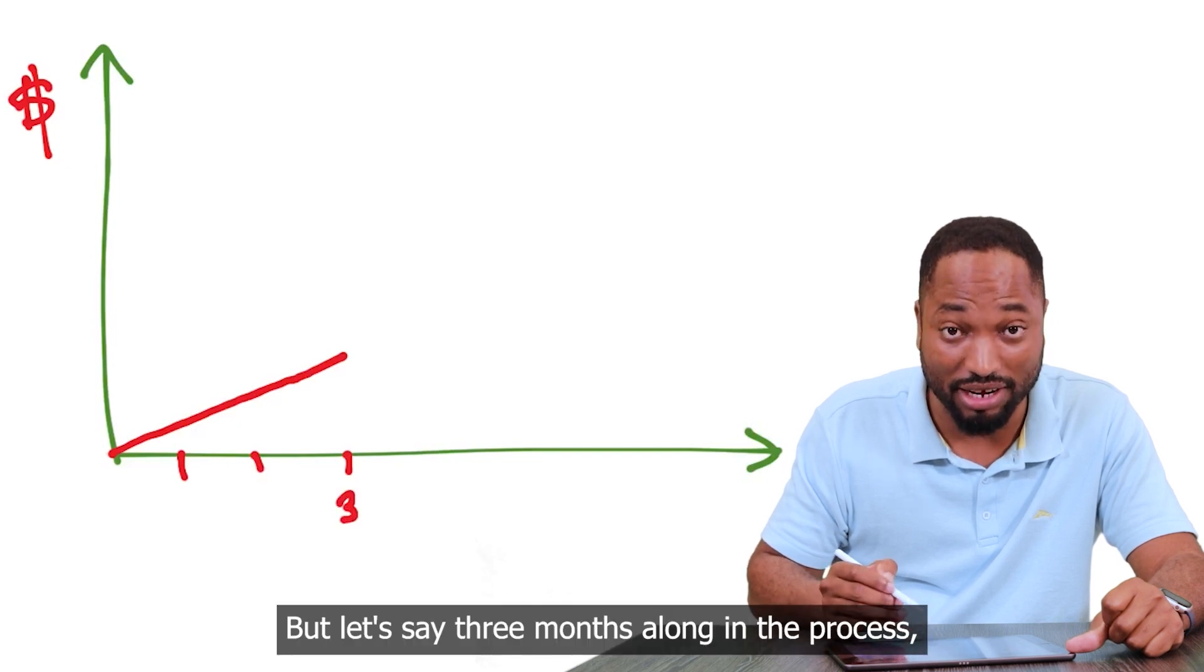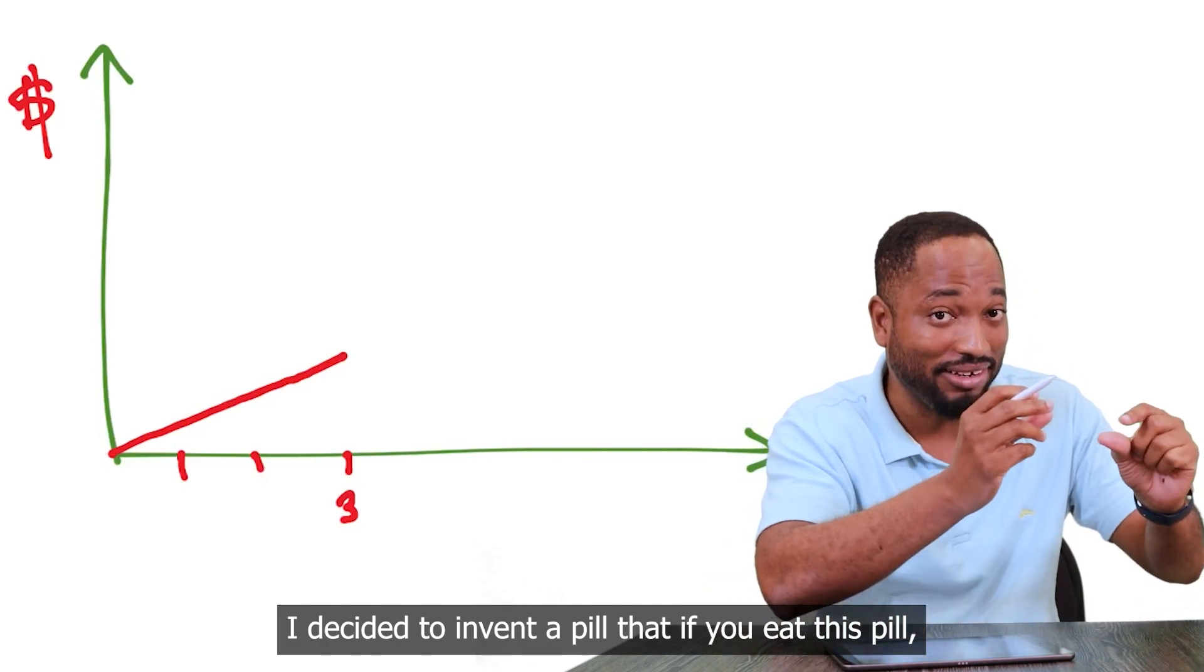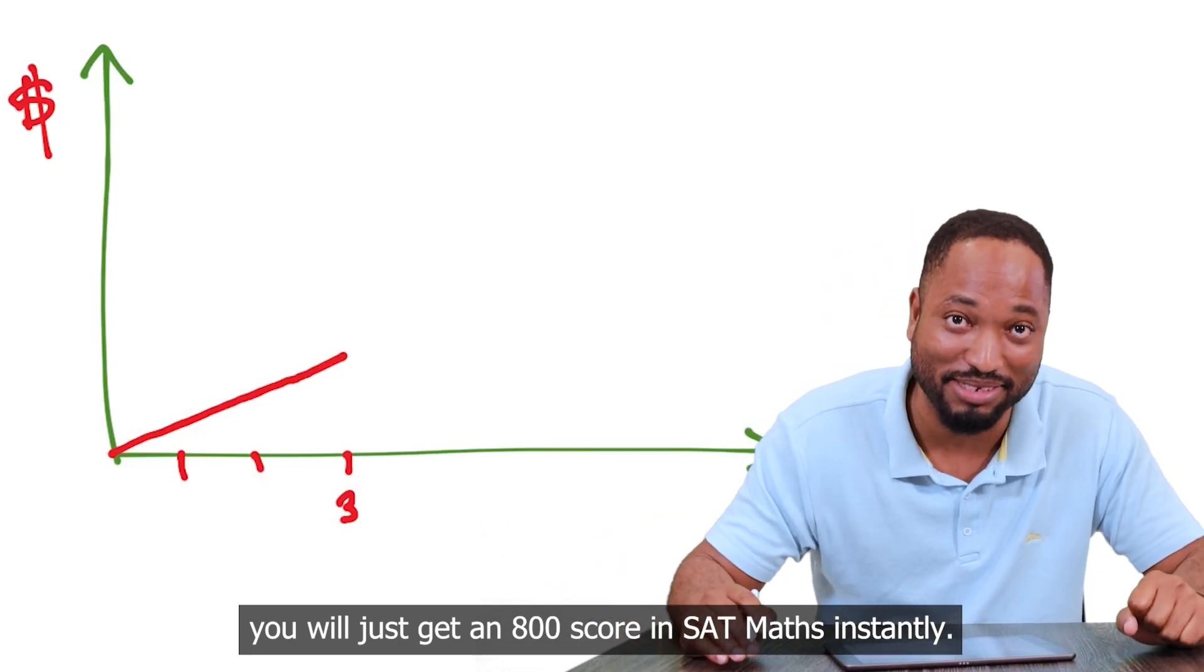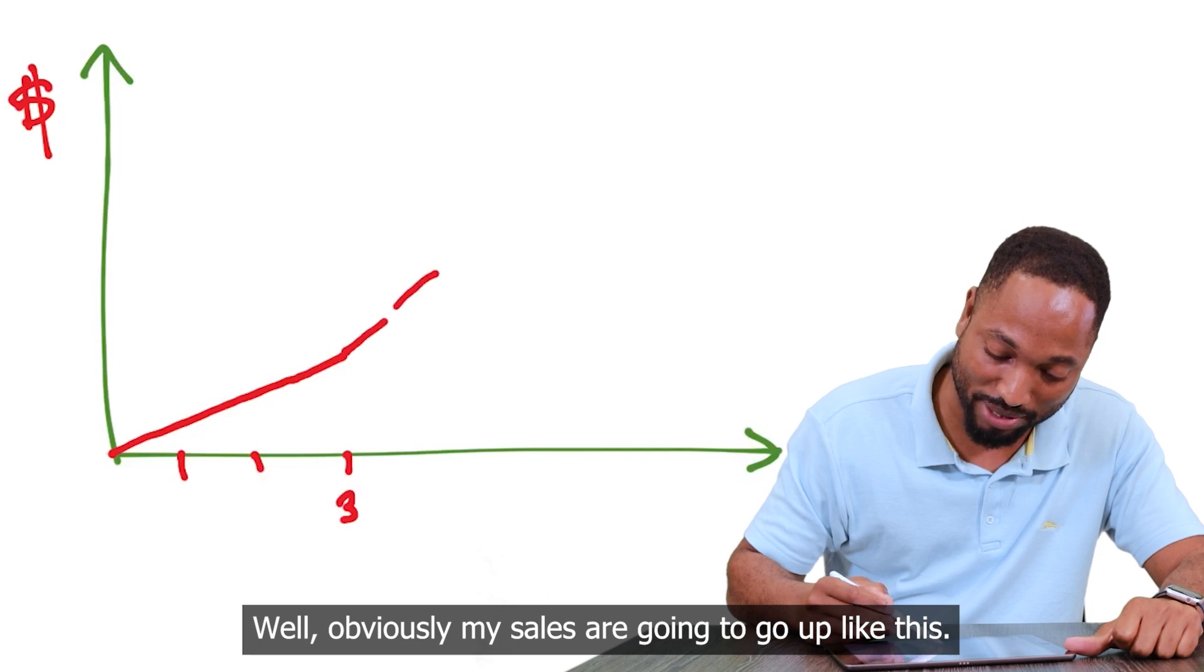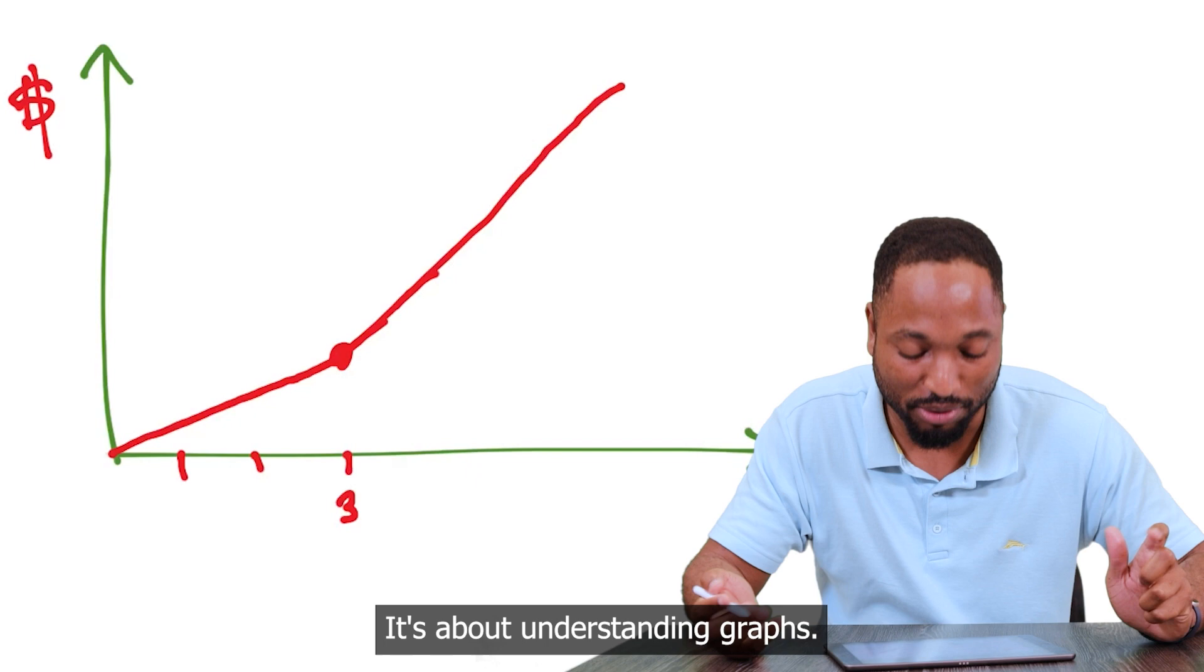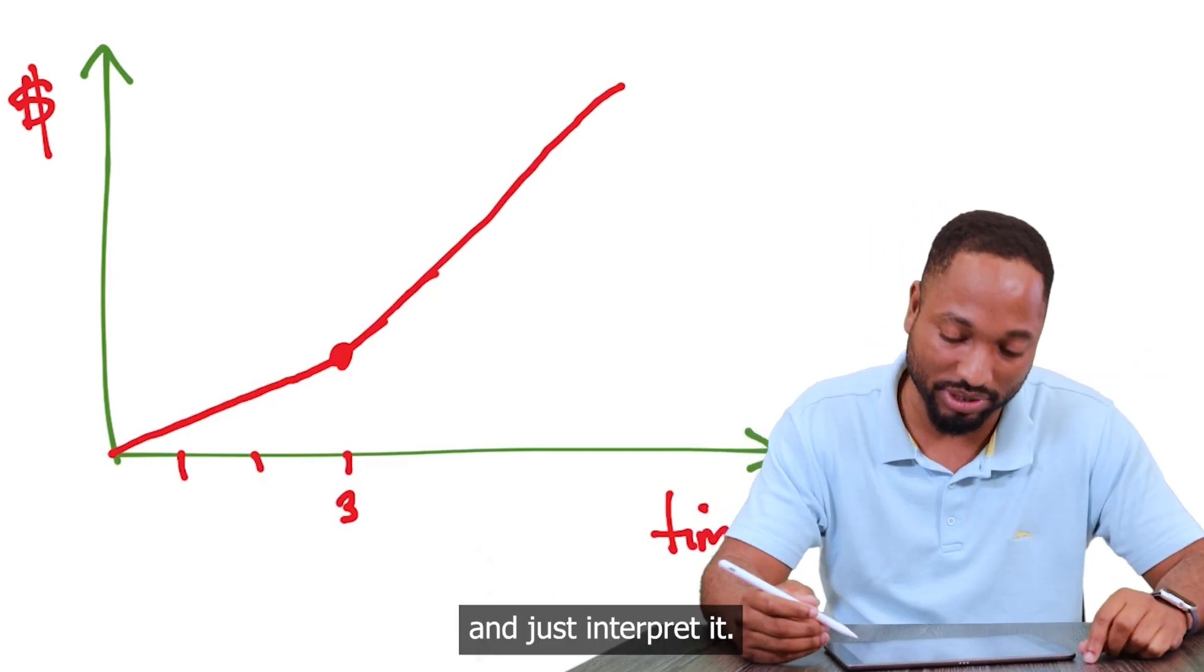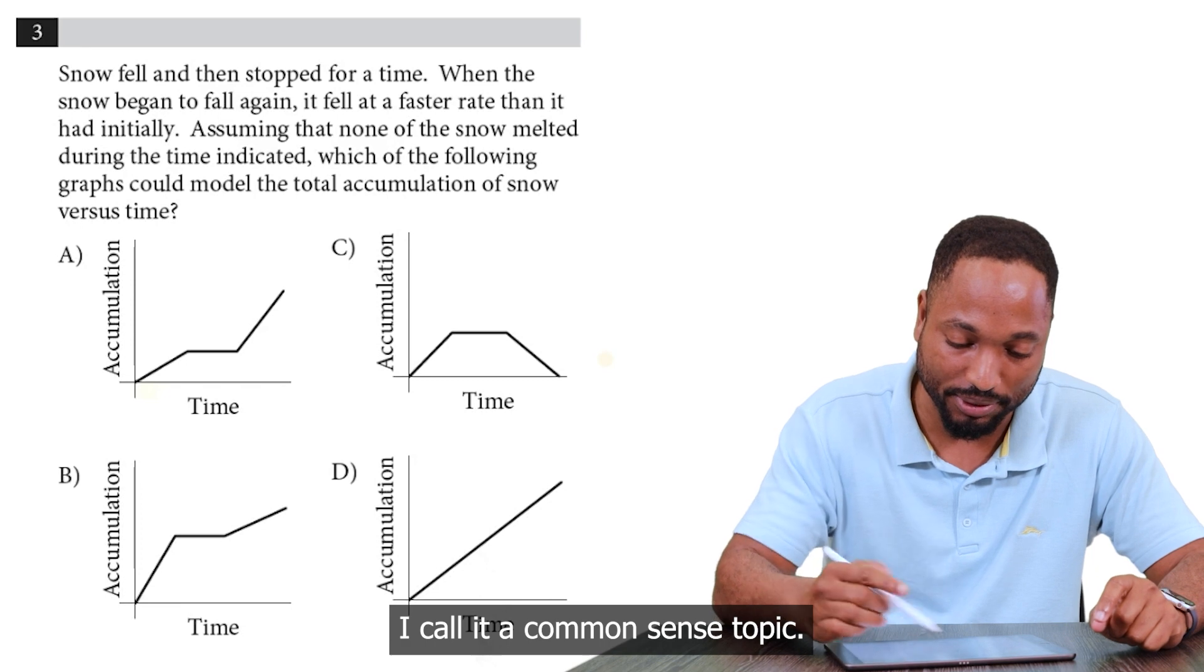But let's say three months along in the process, I decided to invent a pill. That if you eat this pill, you will just get a 800 score on SAT math instantly. Well, obviously my sales are going to go up like this. This is what this topic is about. It's about understanding graphs. You need to take a good look at what is on the axis and just interpret it. Let me show you. It's an easy topic. I call it a common sense topic.